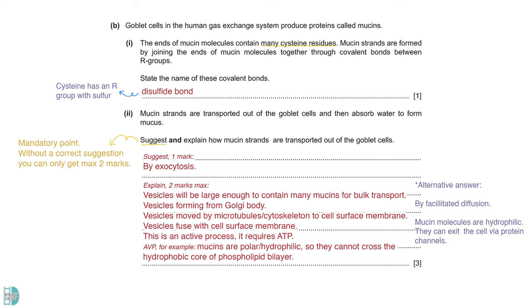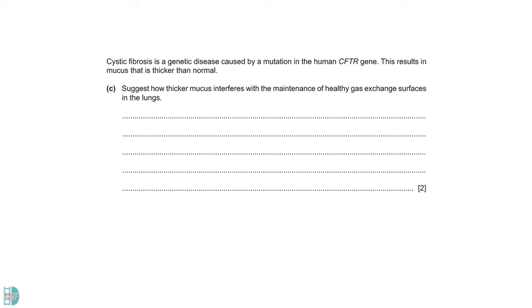In the following question, we have information about cystic fibrosis. Patients with the disease produce mucus that is thicker than normal. Suggest how thicker mucus interferes with the maintenance of healthy gas exchange surfaces in the lungs. The mucus in our lungs is swiped or moved by cilia. If mucus is too thick, cilia have difficulty moving the mucus upwards. This causes pathogens trapped in the mucus to build up as they are not removed. There will be more chance of infection or disease.